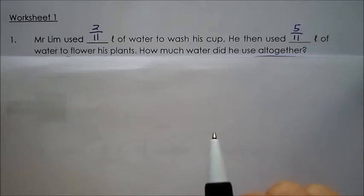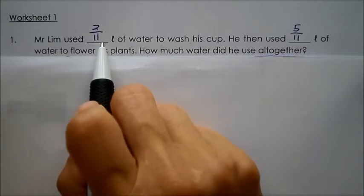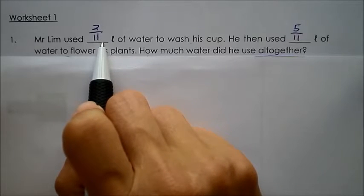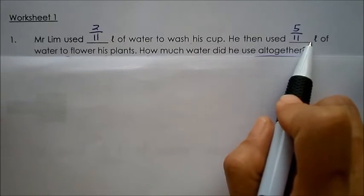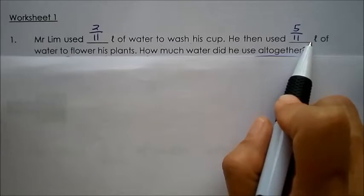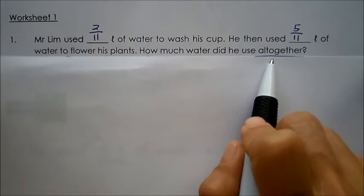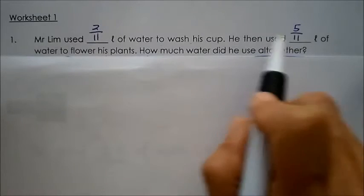Let's understand the question. Mr. Lim used one part of the water to wash his cup. He then used another part of the water to flower his plants. Now we want to find how much water he used altogether, and therefore I shall add the two parts together.